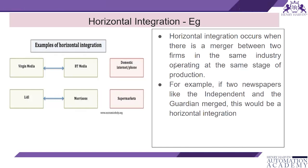For example, if two newspapers like the Independent and the Guardian merge, this would be horizontal integration. In the manufacturing industry, it works at the same level of manufacturing.